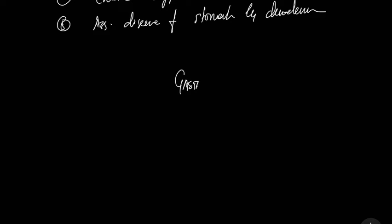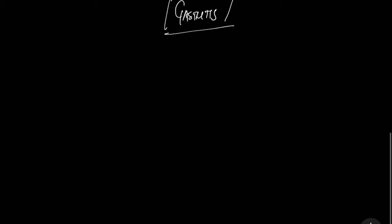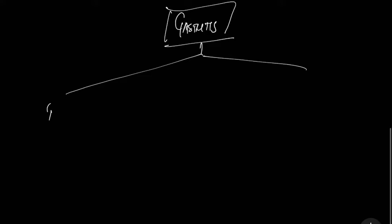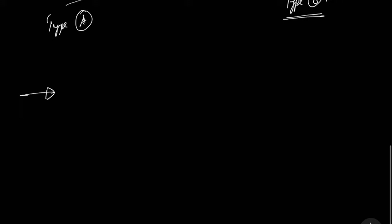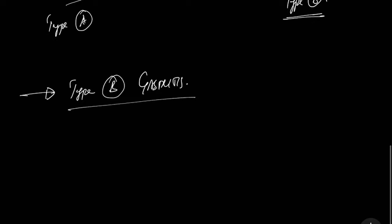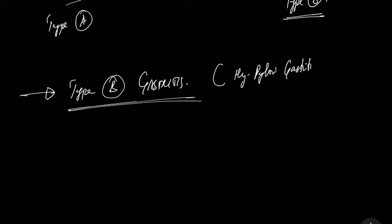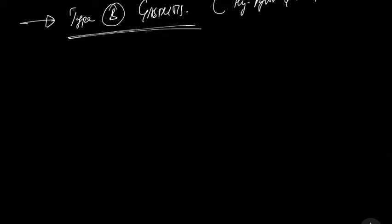Now let's come to the classification of gastritis. Gastritis can be of two types: Type A and Type B. We'll be starting with Type B gastritis, which is also known as H. pylori gastritis.